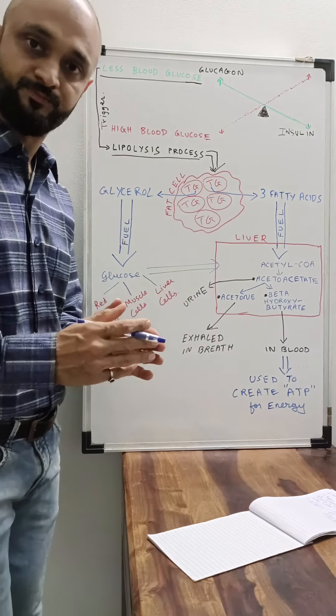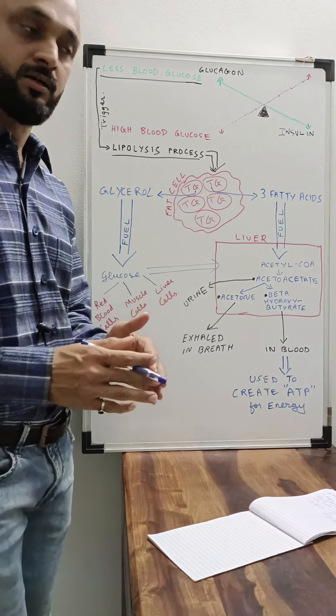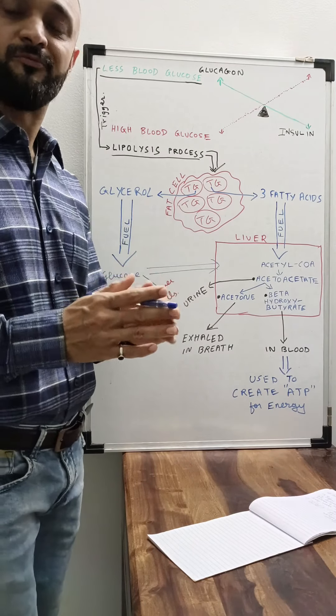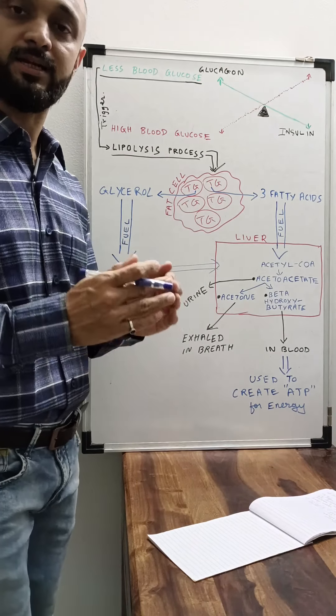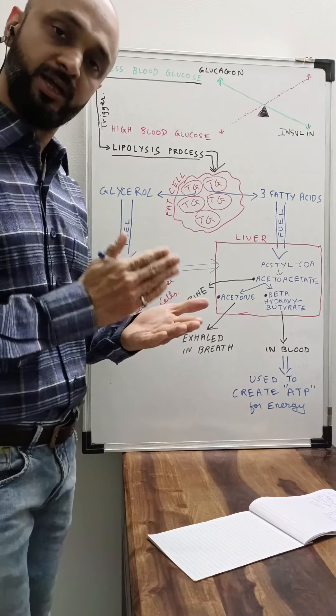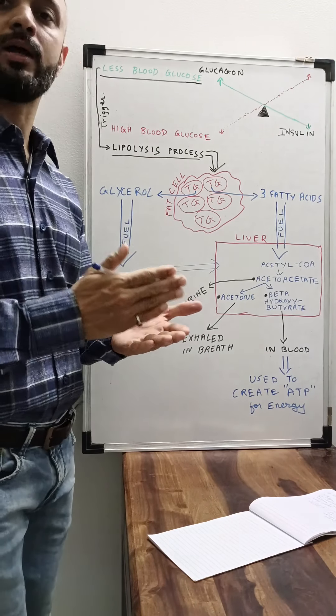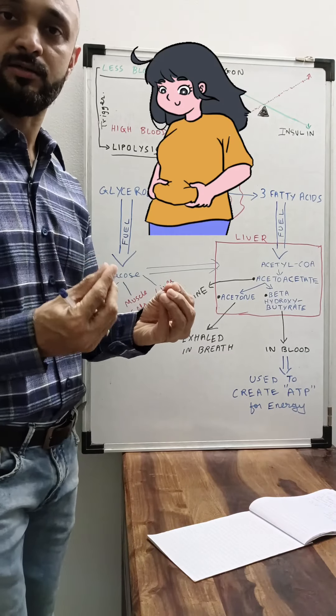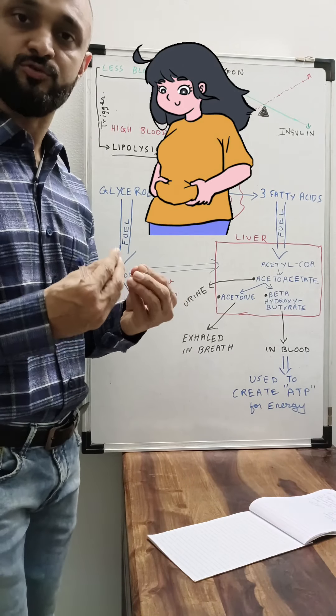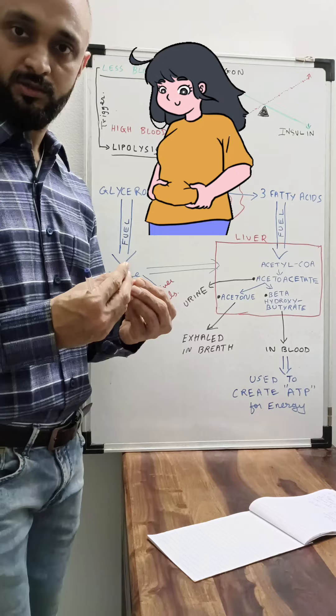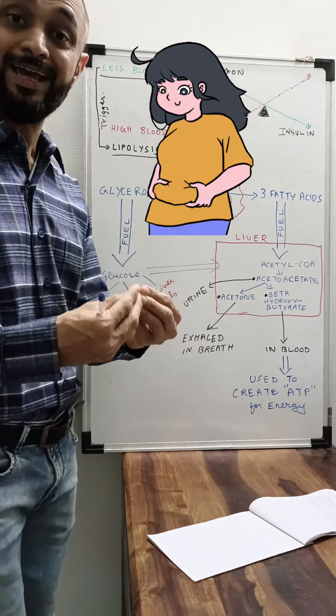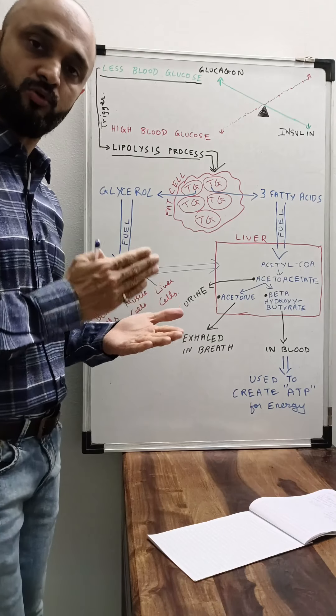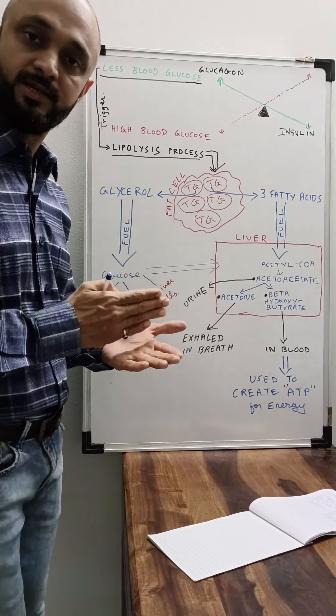To understand ketone bodies, we first have to see how the body creates those ketones. The body creates ketones whenever there is lipolysis, that is when fat starts to break down and provide energy to the body. Whatever fat you have stored in your body in the form of extra energy, whenever that fat is broken down and utilized as energy, the body does make ketone bodies.